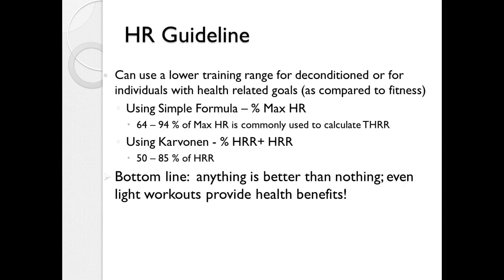People who are deconditioned or are only interested in health goals may not want to work at a higher intensity. It's okay if they work at, say, 60% using the simple formula — it will still give them health benefits. Using the Karvonen formula, you may go as low as 40 or even 30% of the heart rate reserve. Anything is better than nothing; even light workouts will give us health benefits.